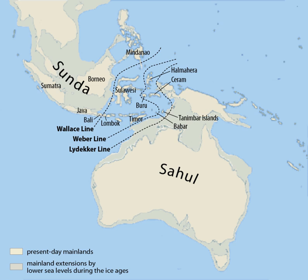However, the current species assemblage on each island is not simply a subset of a universal Sundaland or Asian fauna, as the species that inhabited Sundaland before flooding did not all have ranges encompassing the entire Sunda shelf. Island area and number of terrestrial mammal species are positively correlated, with the largest islands of Sundaland having the highest diversity.